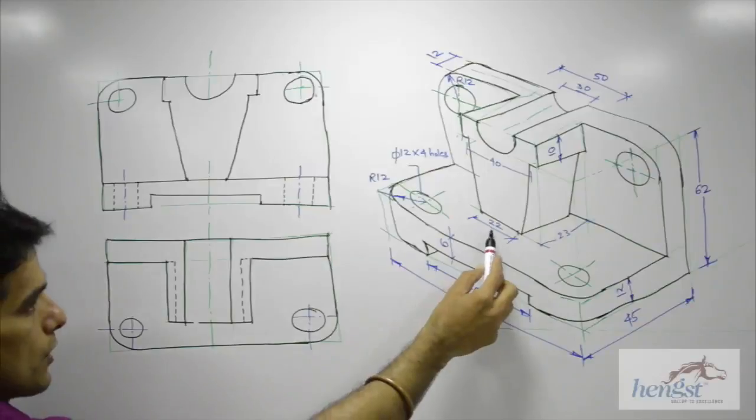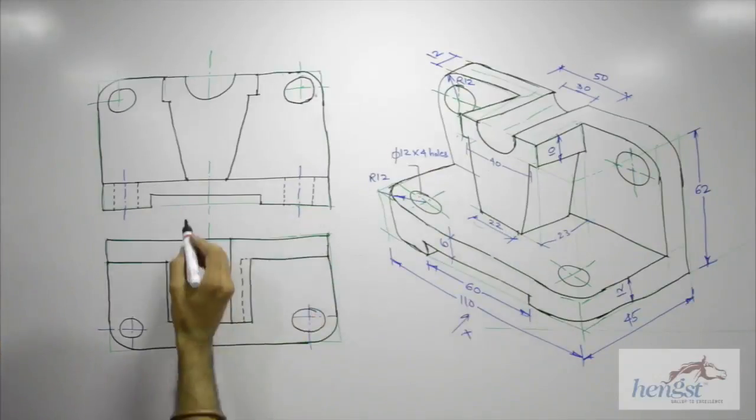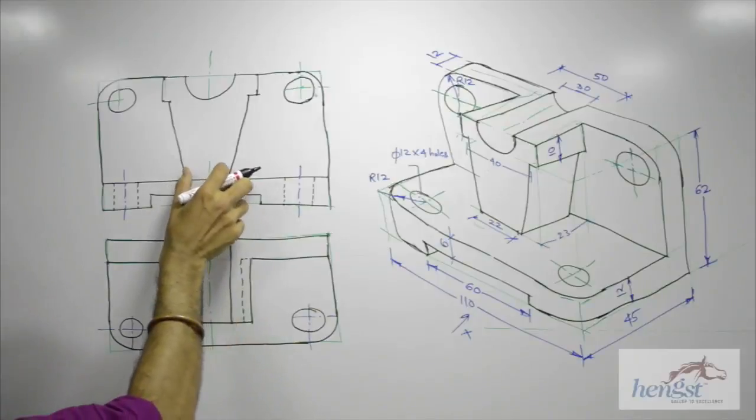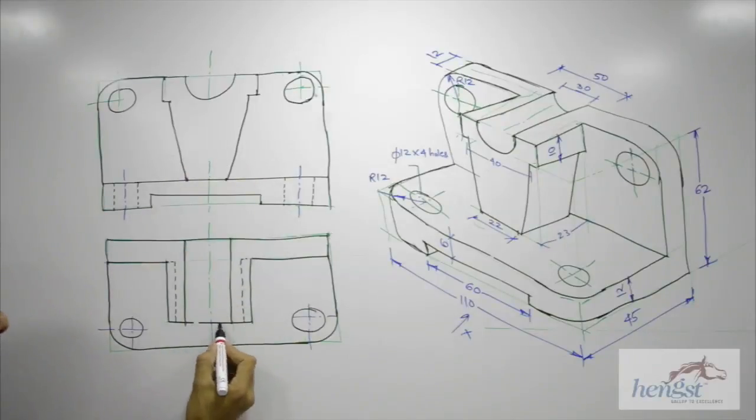Then we have this portion also, this 22. So from center it is 11, 11. So from here we can take this directly from here or we can take 11, and we will extend dotted line.